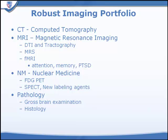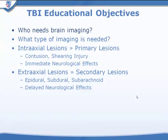There is a robust imaging portfolio available to us, but the mainstay of imaging traumatic brain injury is still computed tomography. We have to recognize the added sensitivity of MRI, especially with new techniques such as diffusion tensor imaging and tractography, magnetic resonance spectroscopy, and functional MRI, which may identify lesions from a functional perspective that may not have obvious anatomic localization.